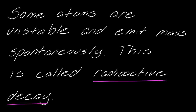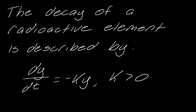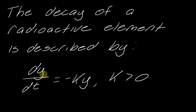So some atoms are unstable and emit mass spontaneously, and this is called radioactive decay. And when an element goes through this process, we call it radioactive. The decay of a radioactive element is described by this differential equation, and I just want to make sure you have some intuitive understanding of this. So y stands for the mass of the element, and t stands for time. So dy/dt equals negative ky — this is really talking about the rate at which the mass decays over time. This is saying that the rate at which the mass decays over time is proportional to its mass.